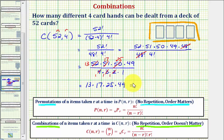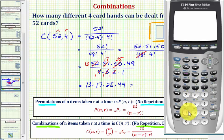And now we'll go to the calculator. So again, thirteen times seventeen times twenty-five times forty-nine is equal to 270,725.